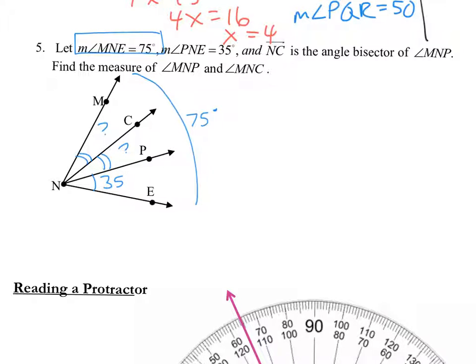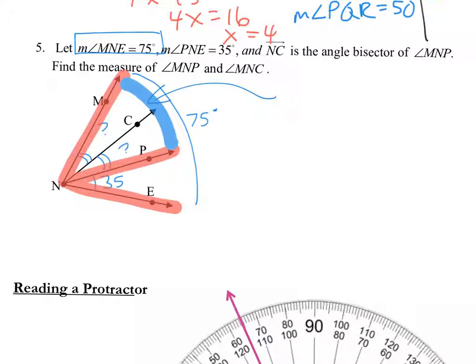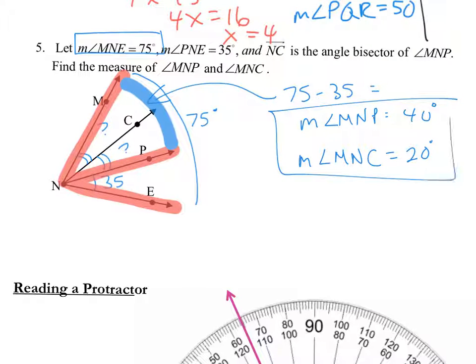So you think you have the answer. We're going to try and find out what MNP is and MNC. I would think of this problem as just like the last one where this angle plus the other angle equals 75. So I can figure out what the measurement of that by simply subtracting 75 minus 35. So the measure of angle MNP, which is one of the answers we need, is 40. Now think about it. MNC is half the size of that because you bisected the other one. So MNC, that measure should be 20 degrees.